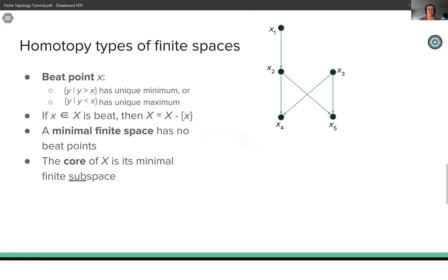We can simplify finite spaces by removing something called a beat point. So a point is beat if either it's punctured upset has a unique minimal element or it's punctured down set has a unique maximal element. And in either case, we can remove the beat point while preserving the homotopy type of the space.